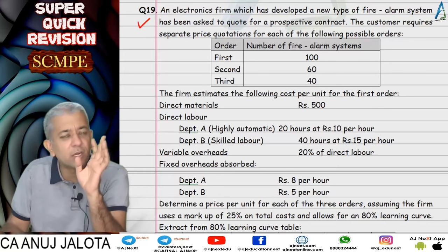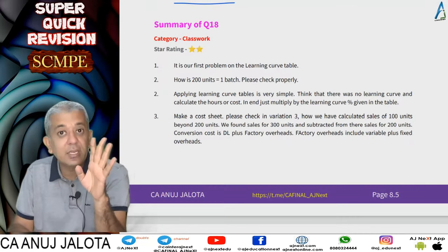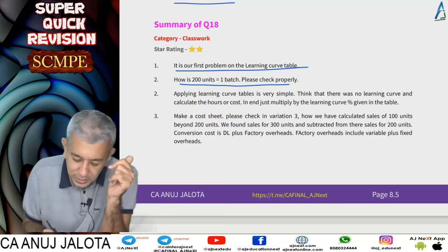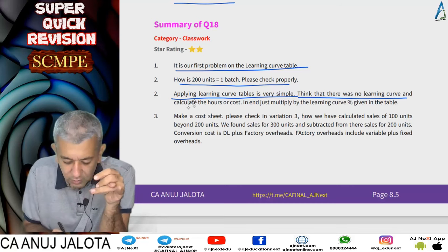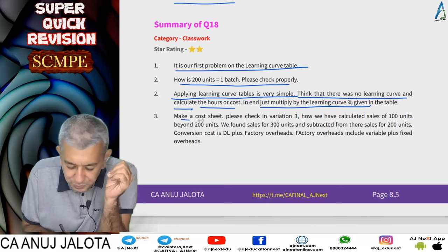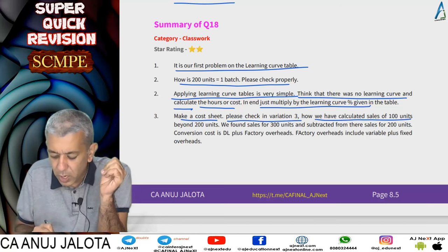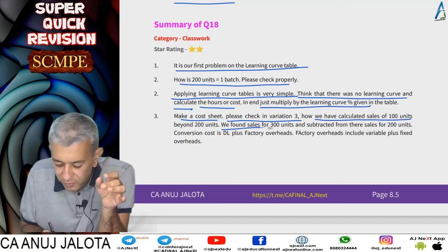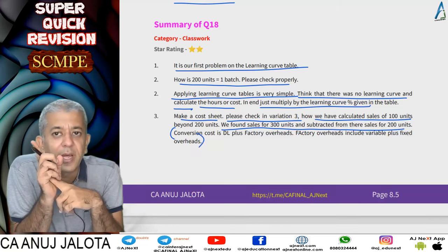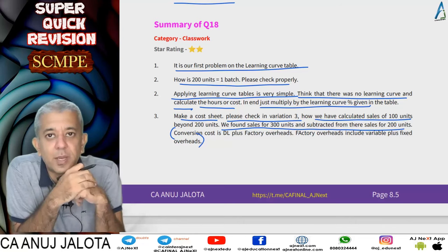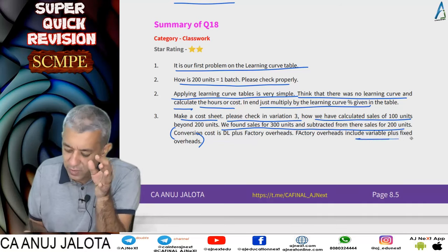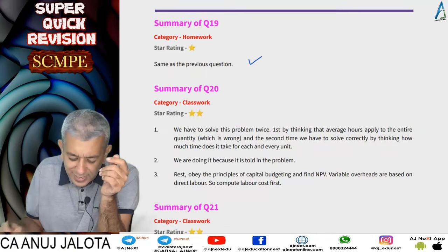Question 19 was a homework question based on question 18. Question 18 is our first question with learning curve tables — 200 units equals one batch. Applying learning curve tables is very simple: think as if there is no learning curve, calculate hours or cost, then just multiply by the learning curve percentage at the end. Make a cost sheet accordingly. Conversion cost means direct labor plus factory overheads, as also covered in the joint products chapter.